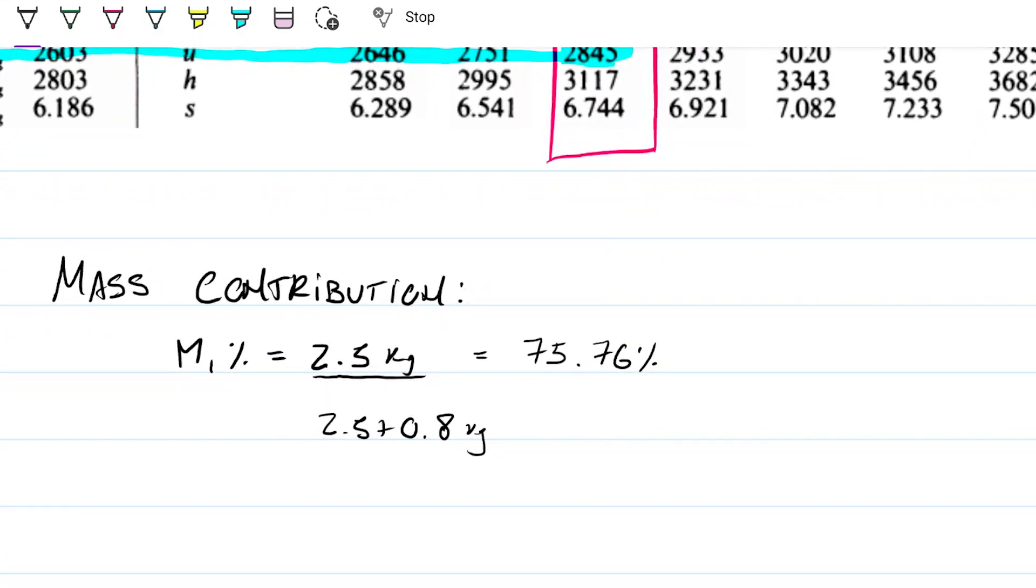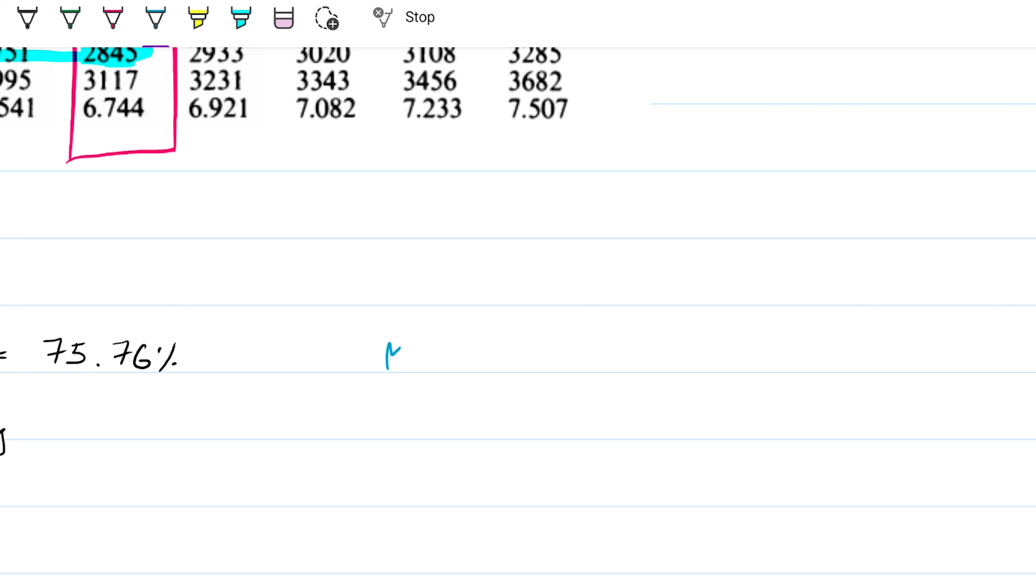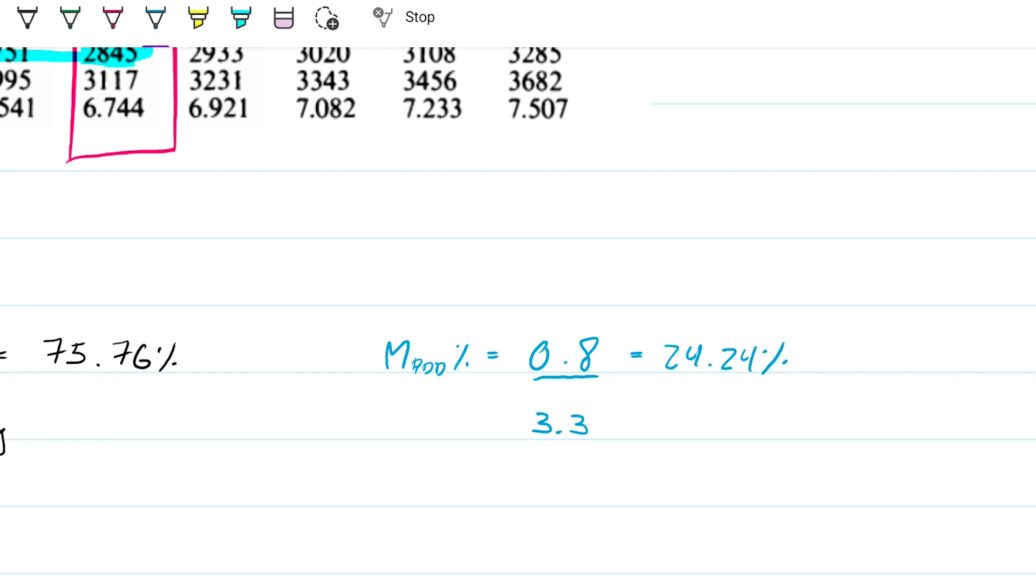And the second mass, the added mass, added contribution is 0.8 out of the 3.3. Same units on both ends. And then, obviously, this needs to be 100% minus this. And this math needs to check out. So this is 24.24%.